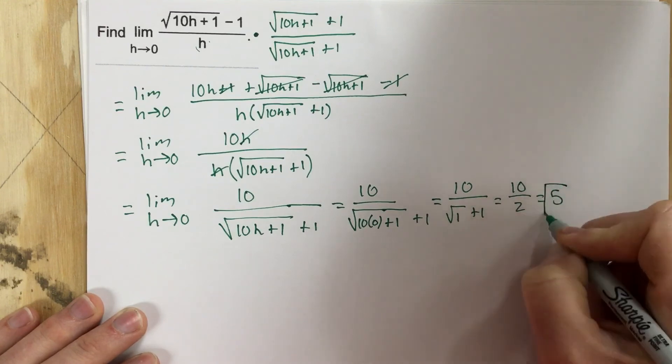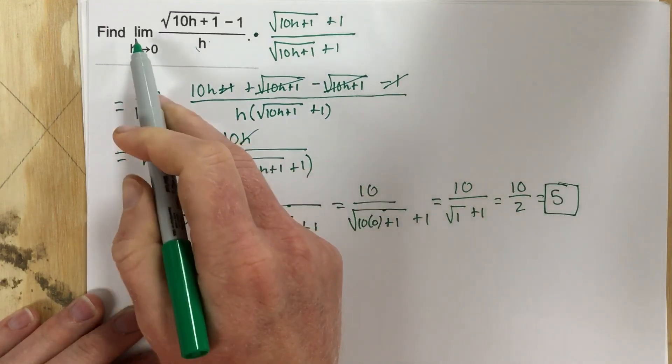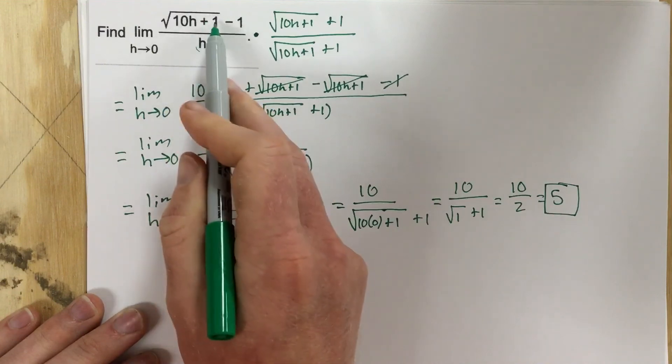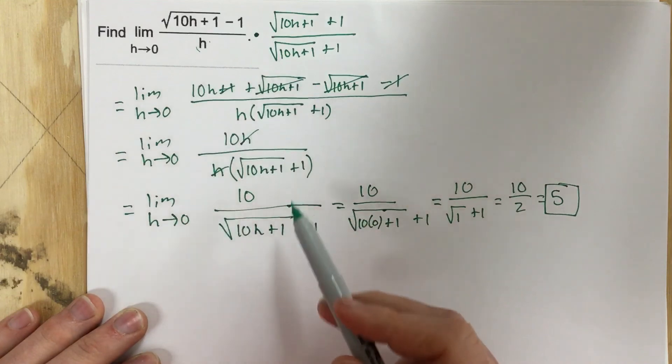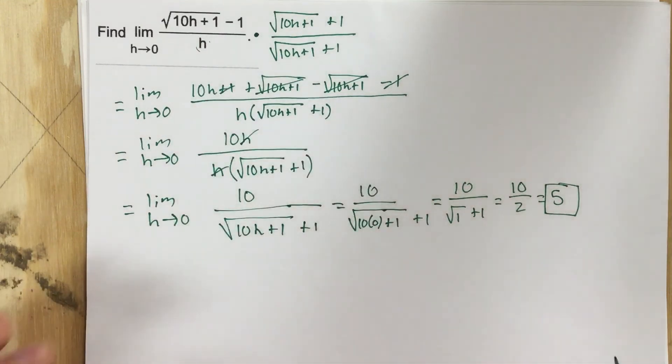And I end up with a limit of 5. So the limit as h approaches 0 of this function is equal to 5. And I used an algebraic manipulation to get rid of this h so that I could actually plug 0 in to find that out.